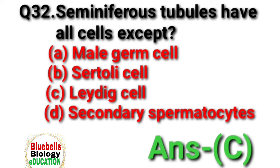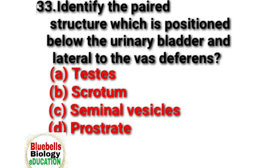Answer is C. Question 33. Identify the paired structure which is positioned below the urinary bladder and lateral to the vas deferens. Options: